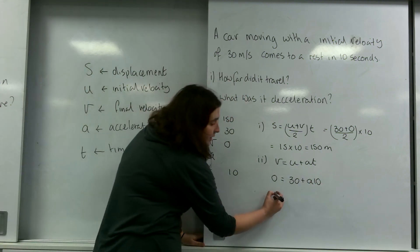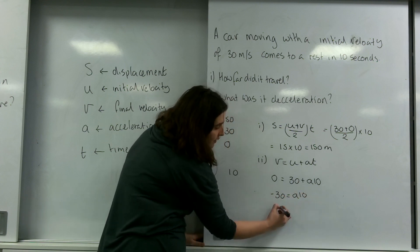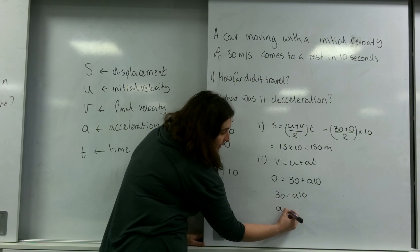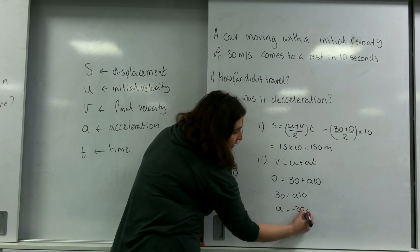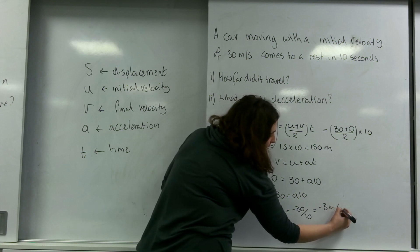Rearranging it, minus 30 equals A times 10. So A equals minus 30 over 10, which is minus 3 metres per second squared.